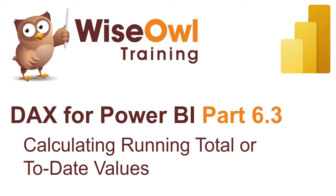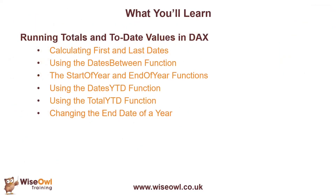Welcome to this Wysel DAX for Power BI tutorial. In this part of the series, we're going to look at how to calculate running total or to-date values. We'll start by looking at how to calculate the first and last dates of different intervals, and use those dates in the Dates Between function to modify the filter context of the measures you write. Then we'll look at how you can use the start of year and end of year functions, before looking at more convenient DAX functions for working with year-to-date figures.